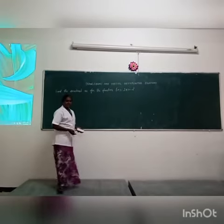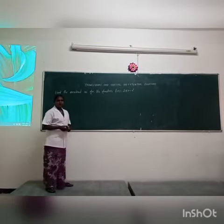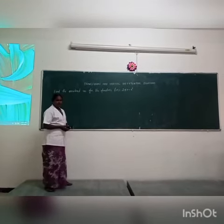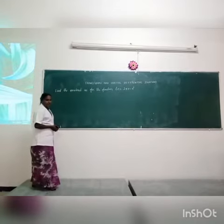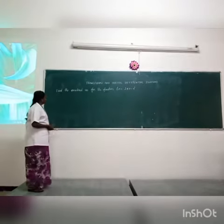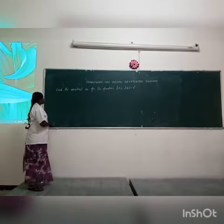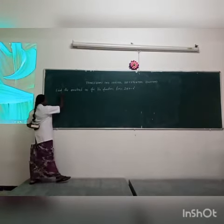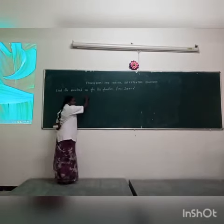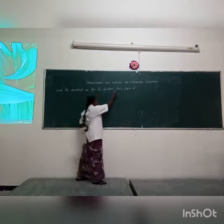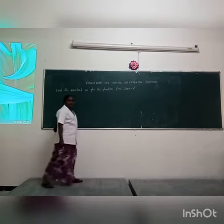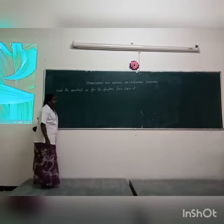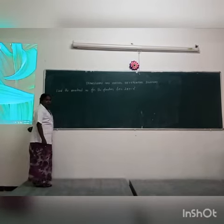Today we see the subject: Transformation, Powerful Differential Equations on the TPDE. Today we have a sum — find the constant A0 for the function f of x equal to 2 pi x minus x square.